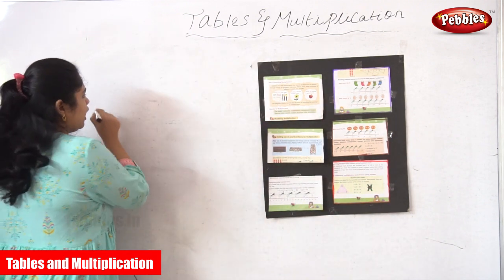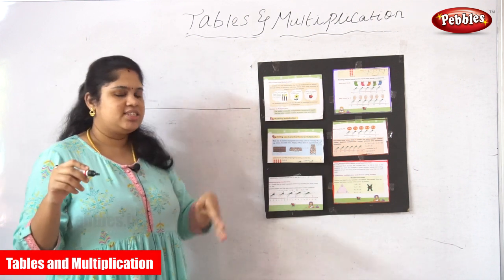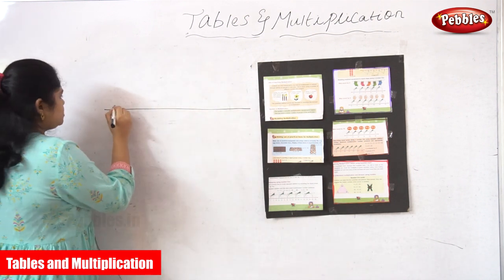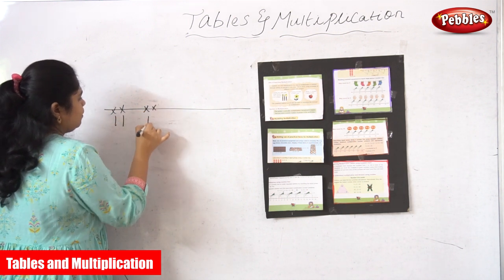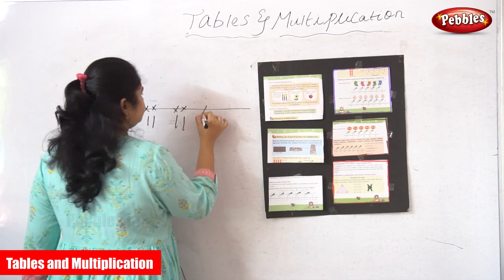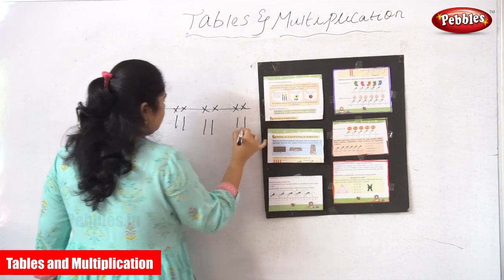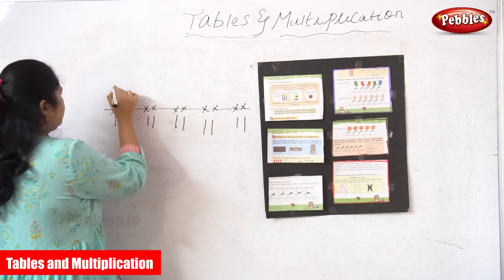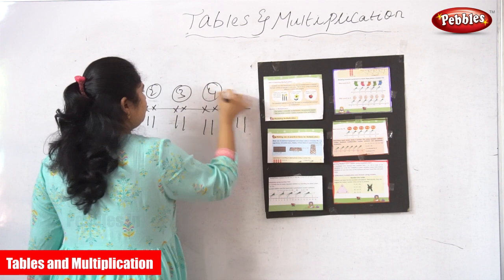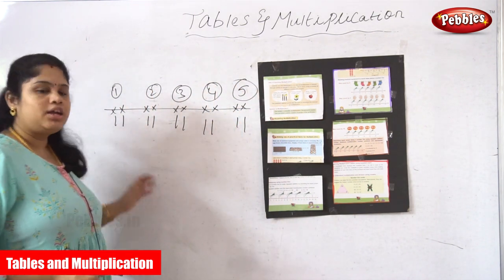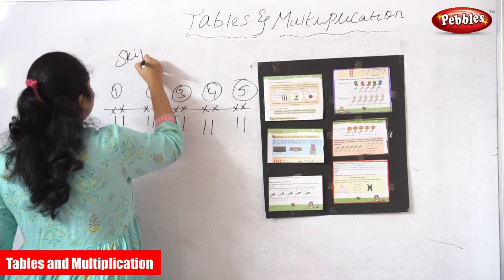Instead of socks I'm just putting sticks to represent this. So I'm putting a pair of sticks, a pair of sticks, a pair of sticks — two each. How many pairs are there? One, two, three, four, and five. There are five pairs, just like the five pairs of socks.